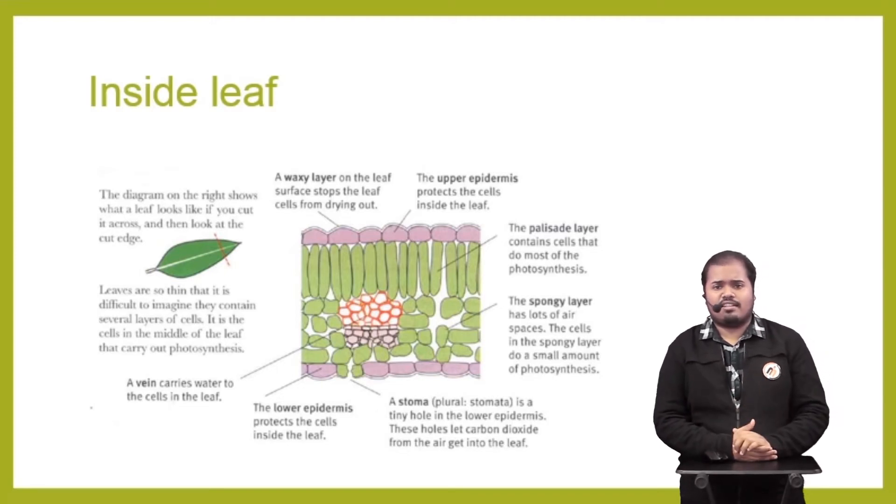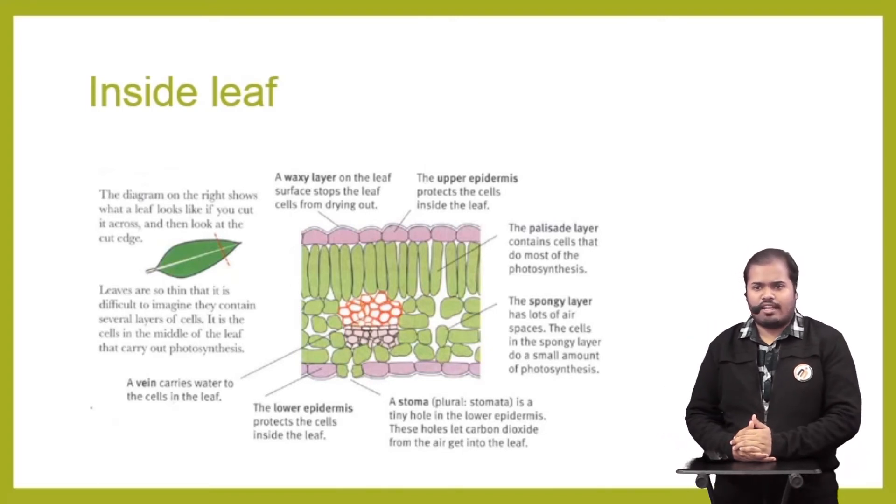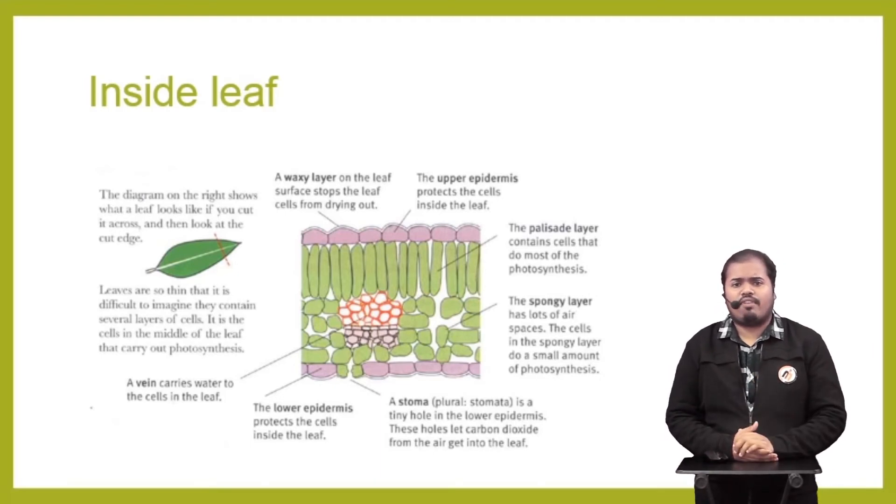The next layer is the spongy layer, which has lots of air spaces. The cells in the spongy layer do a small amount of photosynthesis, and their important function is saving the gases for photosynthesis.